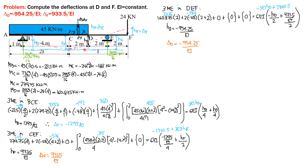We compute the deflection at C first by writing the three-moment equation at B, C, E. The equation is: moment at B, negative 22.5, times length BC which is 4, divided by I which is 2, plus 2 times moment at C times quantity length BC over 4 divided by I which is 1, plus moment at E which is negative 48 times length CE which is 4, divided by I of 1.